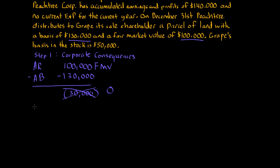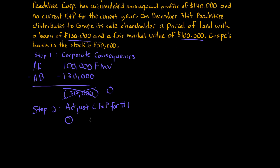Because step one results in zero, step two — where we adjust current E&P for any gain from step one — also has no consequences. You can't adjust current E&P when step one results in zero. So step one has no gain or loss recognized, and step two has no adjustment to current E&P.